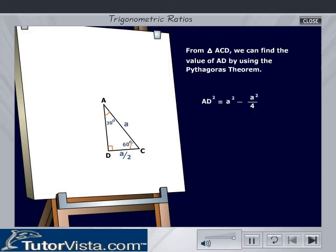AD squared is equal to A squared minus A squared by 4, that is equal to 3 by 4 into A squared. Therefore, AD is equal to root 3 by 2 into A.